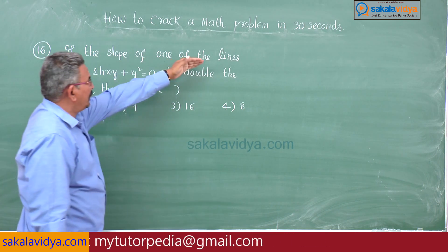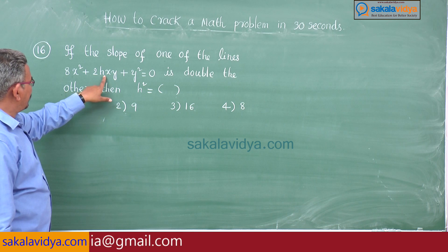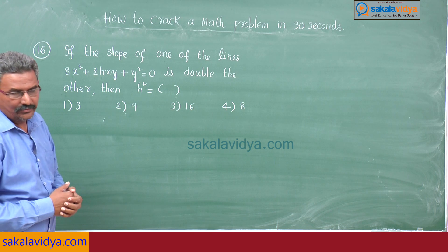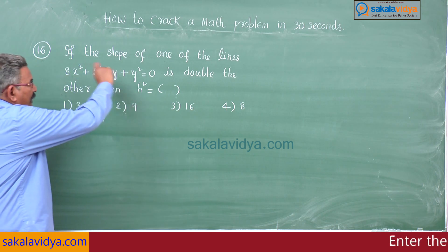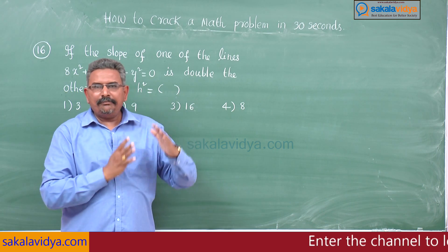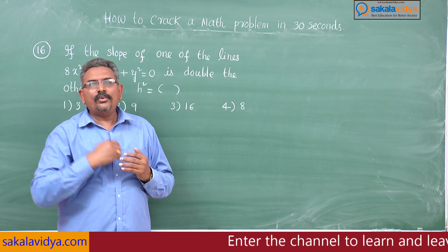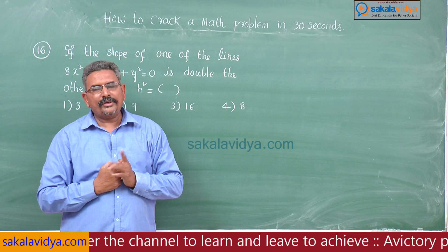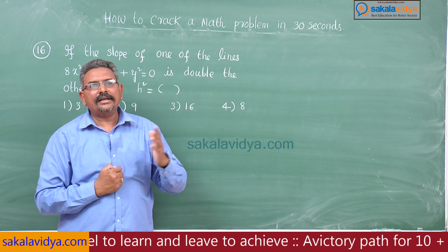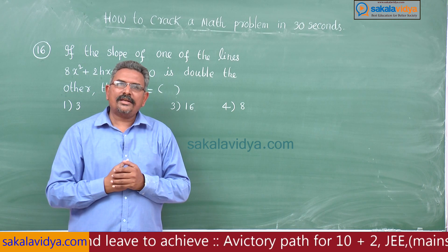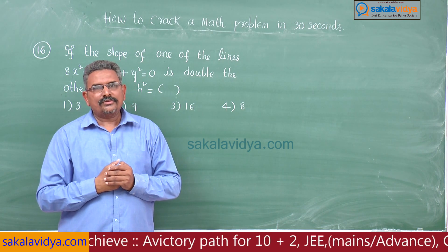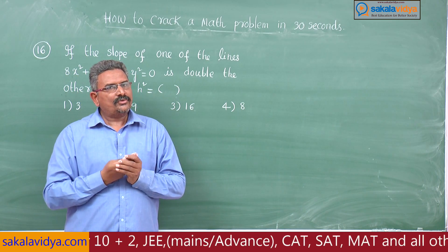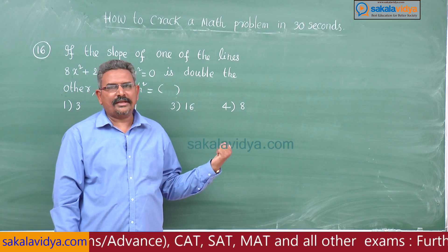16th problem: If the slope of one of the lines 8x² + 2hxy + y² = 0 is double the other, then h² equals. According to the keyword, let m be the slope of the first line and 2m the slope of the second. So m1 = m, m2 = 2m — the slopes are in ratio 1:2. This problem can be converted into a quadratic equation, and there is a shortcut to solve it easily.